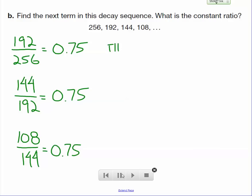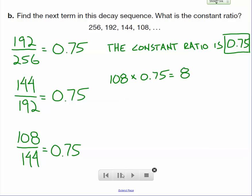So, the constant ratio here is 0.75, obviously. So to get the next term, all we have to do is multiply the previous term by 0.75. 108 times 0.75 is our next term, and that is 81.